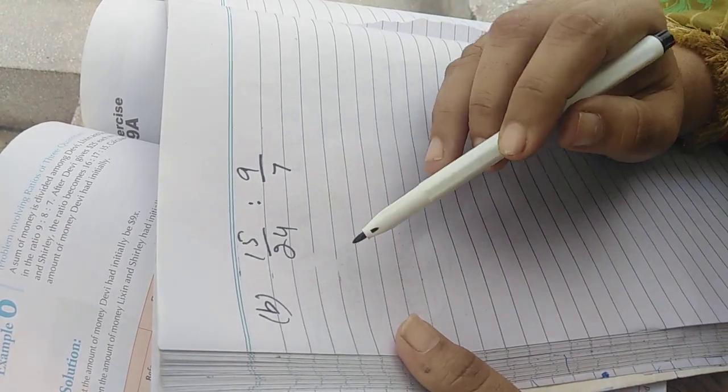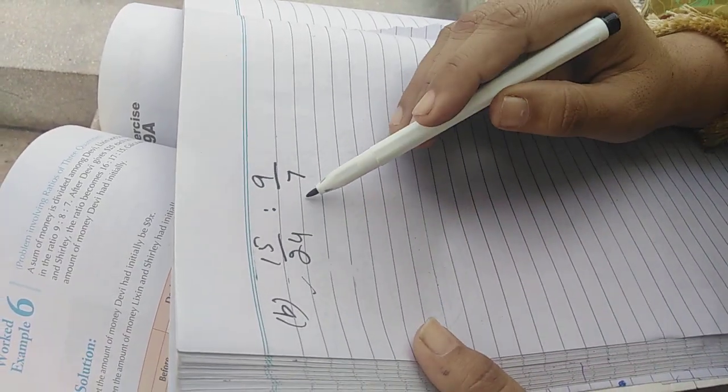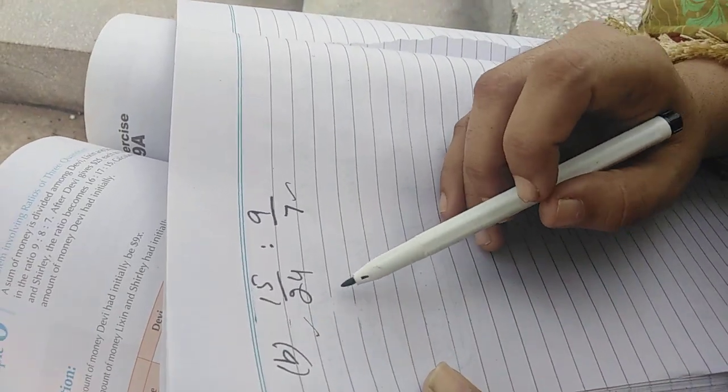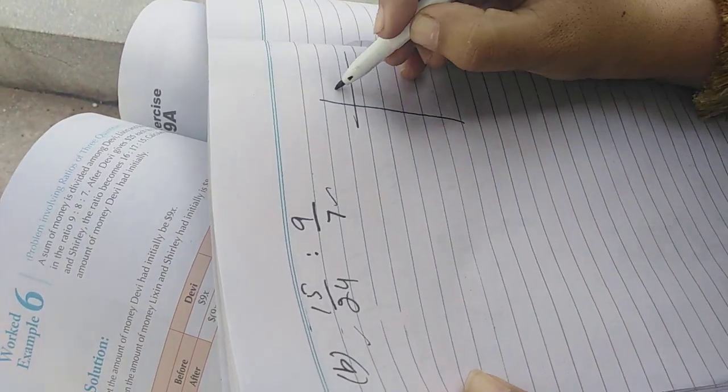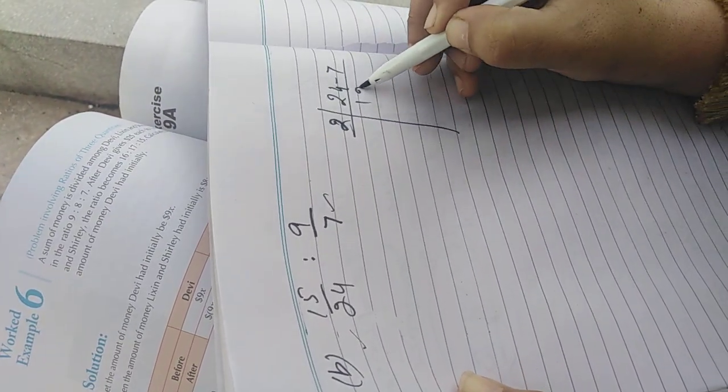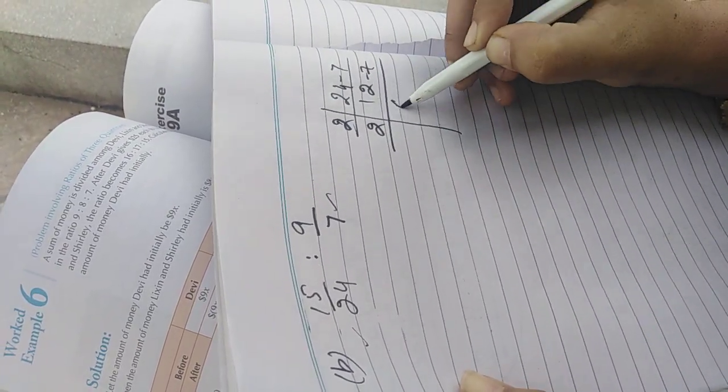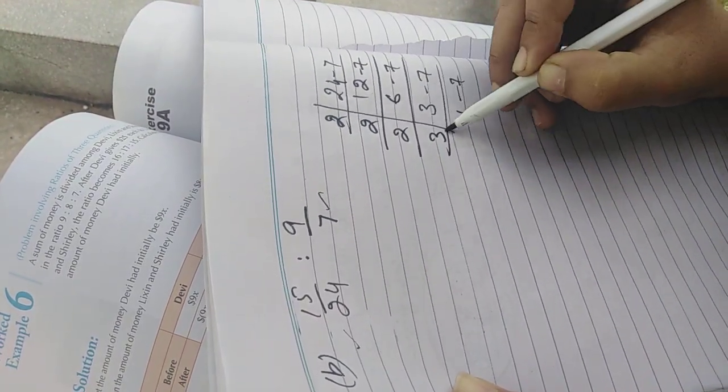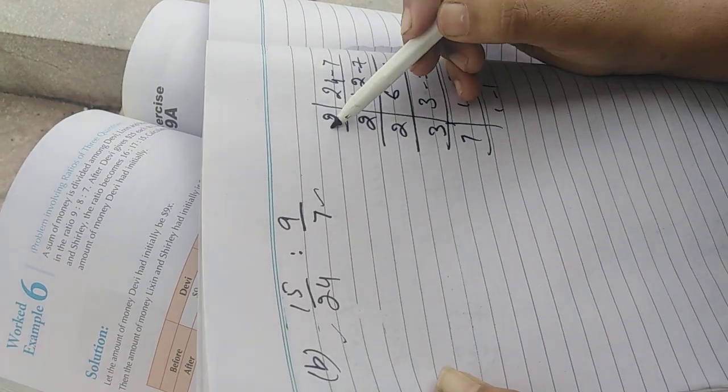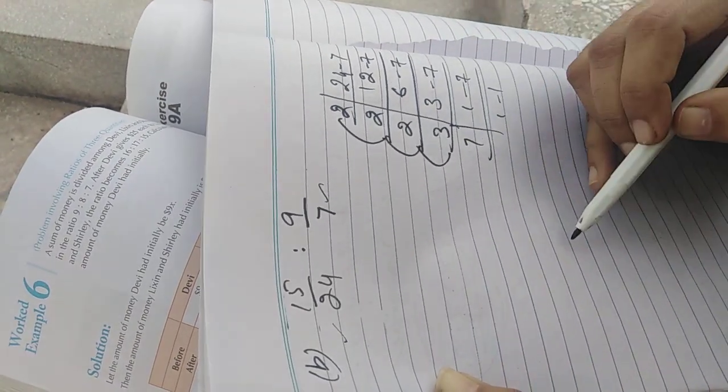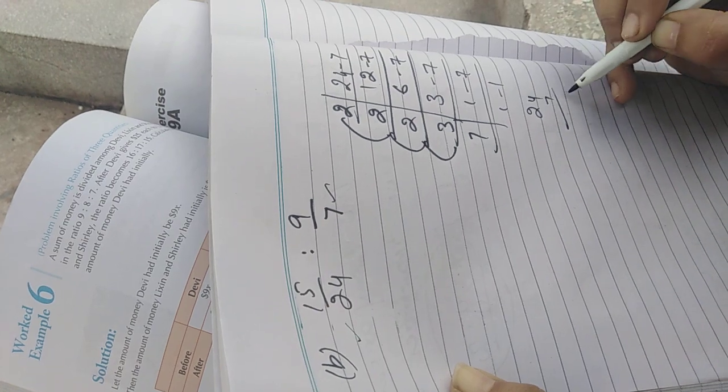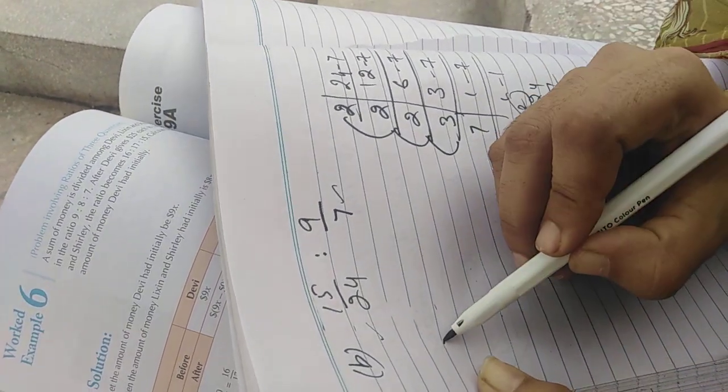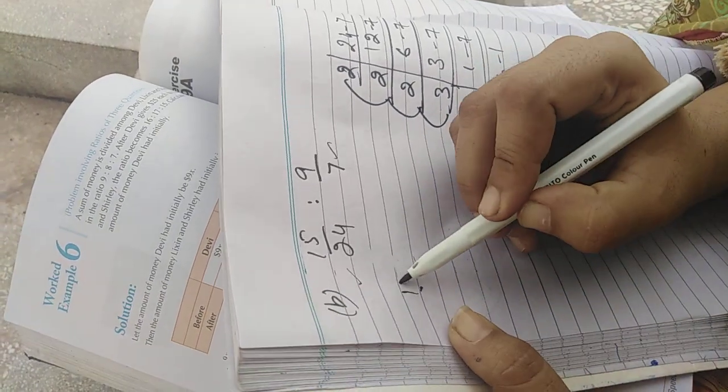When you are having fractions in the ratio, you have to take the LCM of the denominators. In this question, the denominators are 24 and 7, so we will take the LCM of 24 and 7. Two fours are 8, 8 threes are 24, 24 sevens are 168. So the LCM is 168.